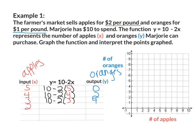What if I had 2 apples? Then I would have 10 minus 2 times 2. So 2 times 2 gives me 4, and 10 minus 4 gives me 6 oranges. What if I had 1 apple? Then 10 minus 2 times 1: 2 times 1 gives me 2, so 10 minus 2 gives me 8 oranges. What if I had 0 apples? Then 10 minus 2 times 0: 2 times 0 is 0, so I would have 10 oranges.